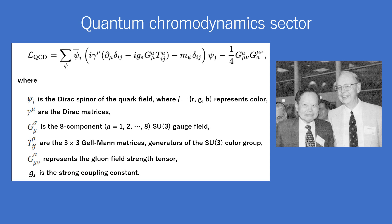Tᵃᵢⱼ are the 3×3 Gell-Mann matrices, generators of the SU(3) color group. Gᵃᵘᵛ represents the gluon field strength tensor, and gₛ is the strong coupling constant.